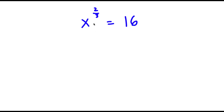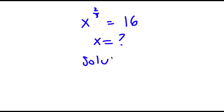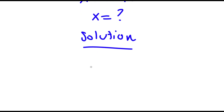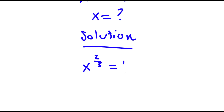Alright, so I have x to the power of 2 thirds is equal to 16. So right here I obviously want to find the value of x. So for my solution, first start with x to the power of 2 thirds is equal to 16.